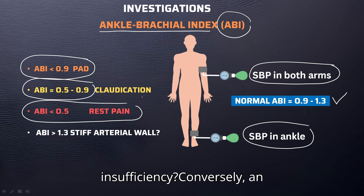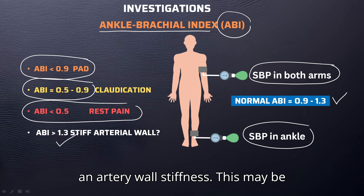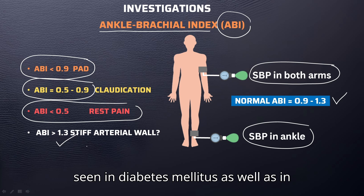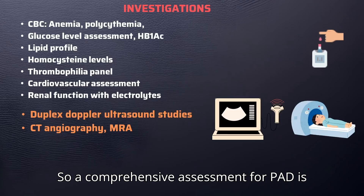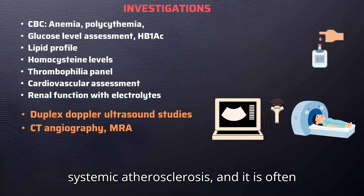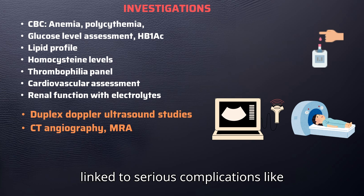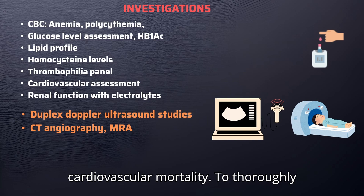Conversely, an elevated ABI greater than 1.3 can be suggestive of arterial wall stiffness, which may be seen in diabetes mellitus as well as in chronic kidney disease. A comprehensive assessment for PAD is vital as it serves as a marker for systemic atherosclerosis, often linked to serious complications like myocardial infarction, strokes, and cardiovascular mortality.